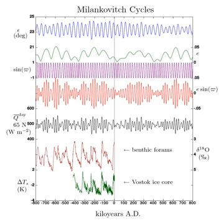100,000-year problem: Of all the orbital cycles, Milankovitch believed that obliquity had the greatest effect on climate, and that it did so by varying the summer insolation in northern high latitudes.